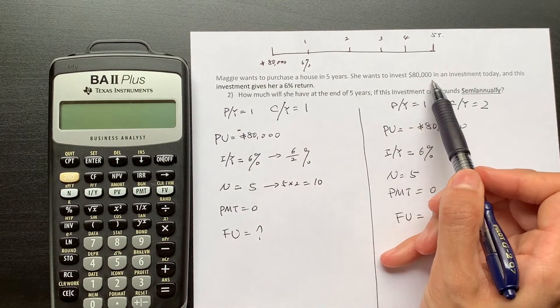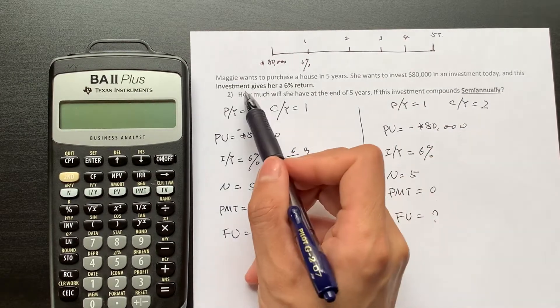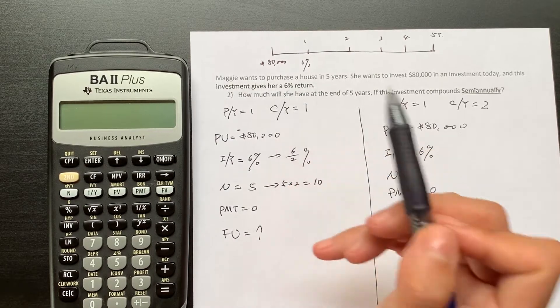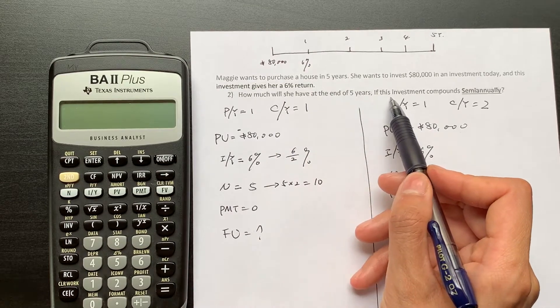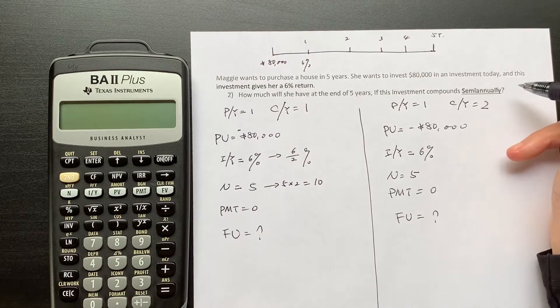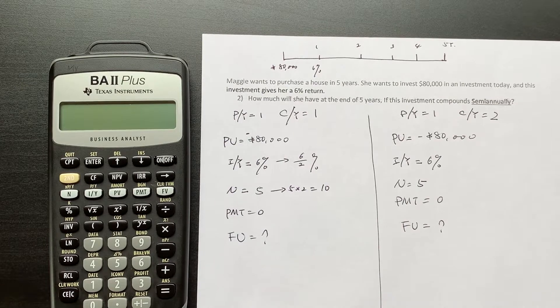80,000 dollars in an investment today, and this investment will give her a 6% annual return. How much will she have at the end of five years if the investment compounds semi-annually?